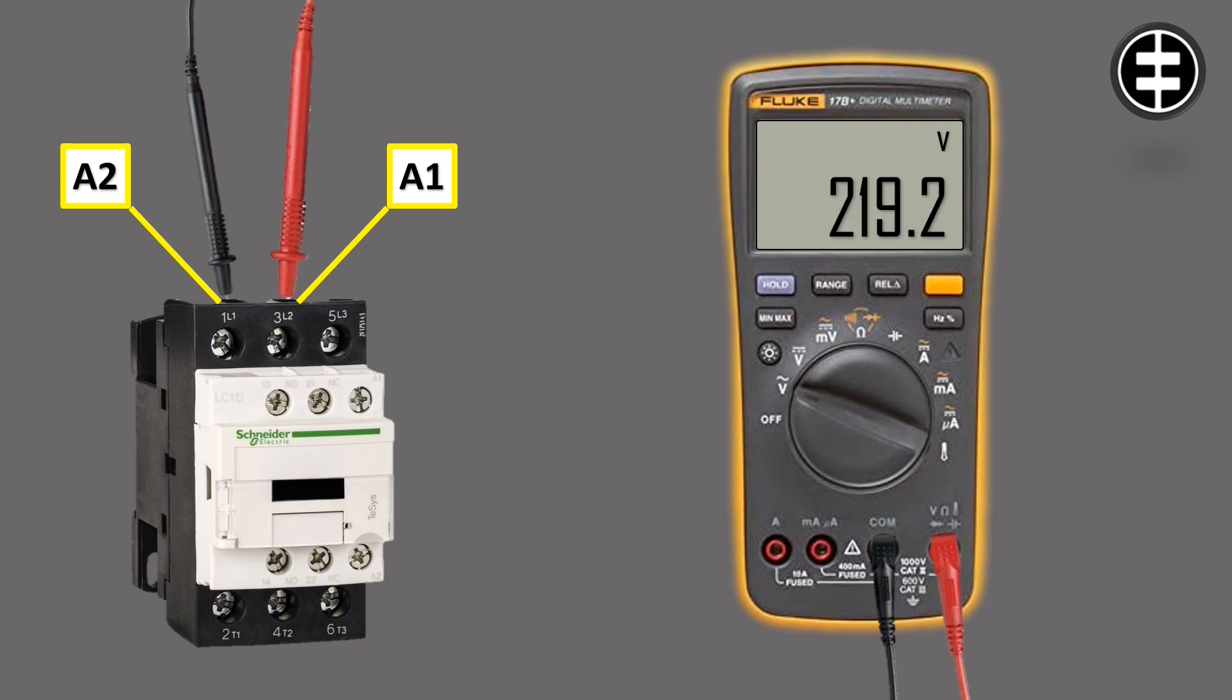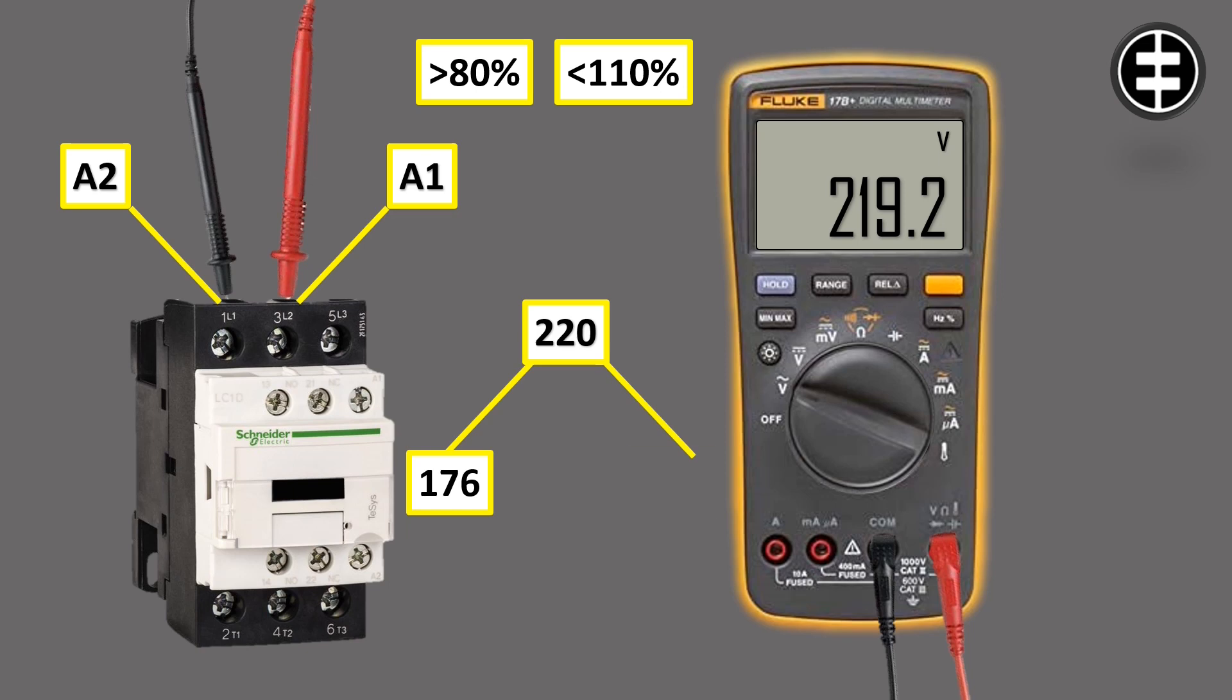It should be more than 80% and less than 110% of the coil nominal voltage. For example, if the contactor coil voltage is 220 volts, the accepted measurement should be from 176 volts to 242 volts.